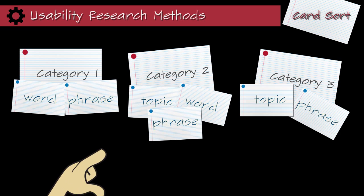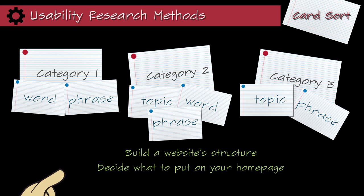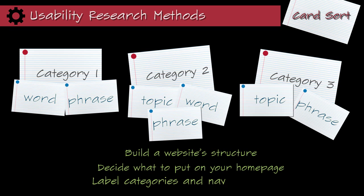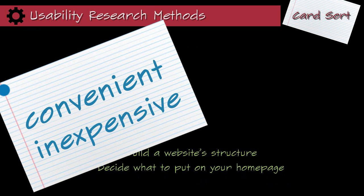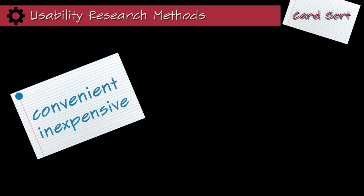This tool allows you to build a website structure, decide what to put on your homepage, and label categories and navigation tools. You can purchase all-inclusive kits containing everything to quickly create paper card sort prototypes. While paper is convenient and inexpensive, it isn't a realistic mock-up and the testing needs to be facilitated in person.